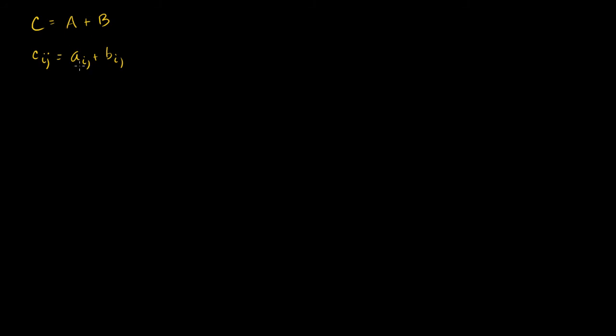You just get the corresponding entry in the same row and column, add them up, and you get your entry in the same row and column in your new matrix — it's the sum of the other two.